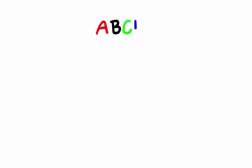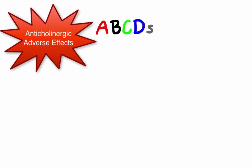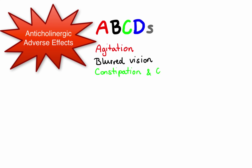Before we move on to the next group, remember the ABCDS mnemonic to recall anticholinergic adverse effects: A stands for agitation, B stands for blurred vision, C stands for constipation and confusion, D stands for dry mouth, and S stands for stasis of urine and sweating.